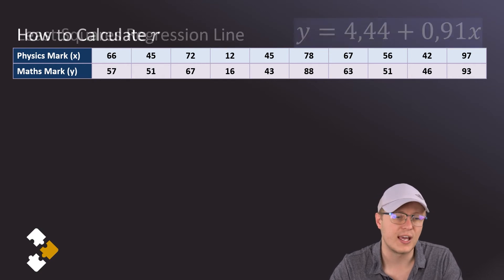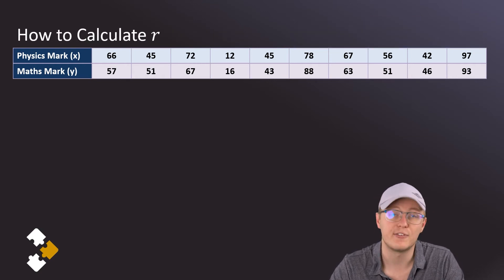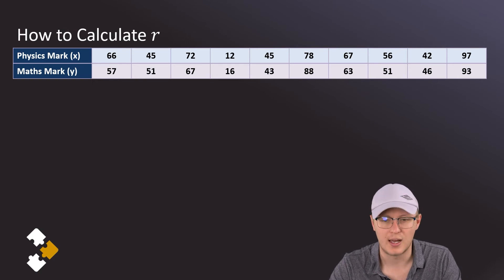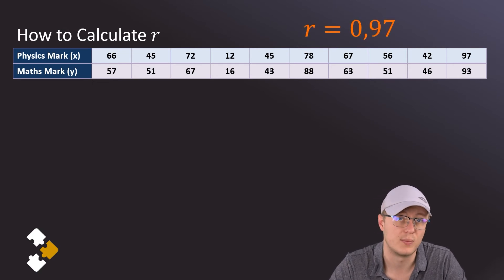And then in order to calculate r, all we have to do is go again SHIFT, STAT, use that option 5, and then we just select the third one that says R. And then I get an answer here of 0.9662, which we can round up to 0.97.